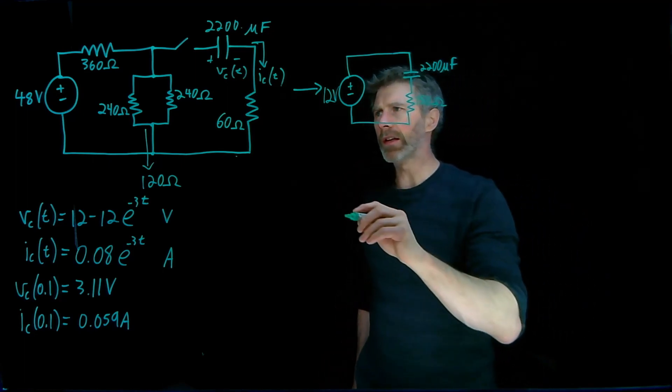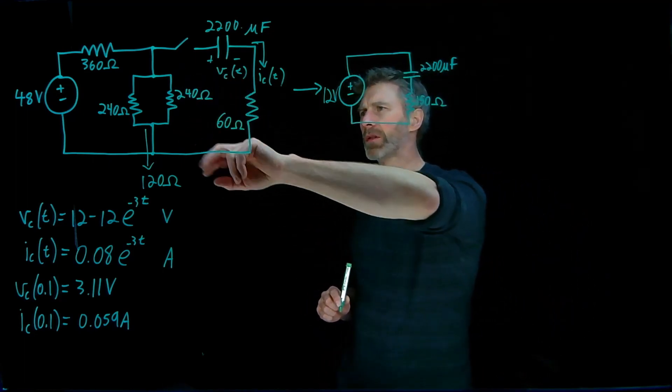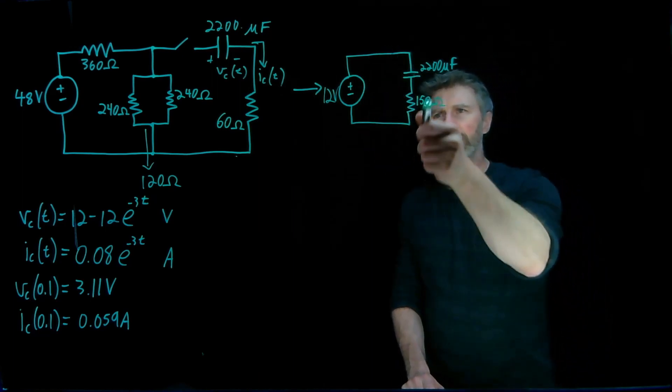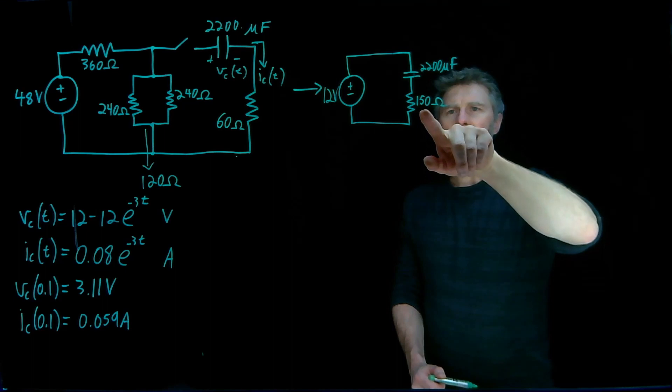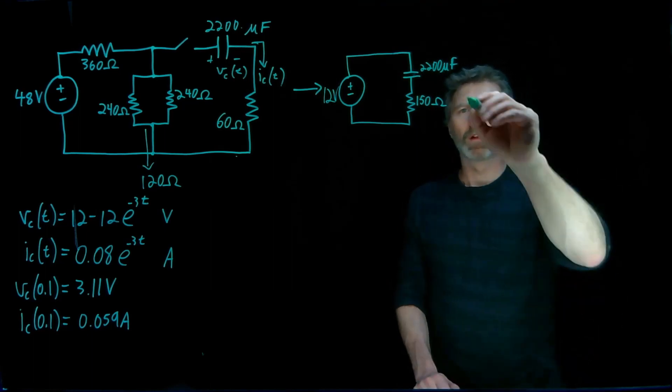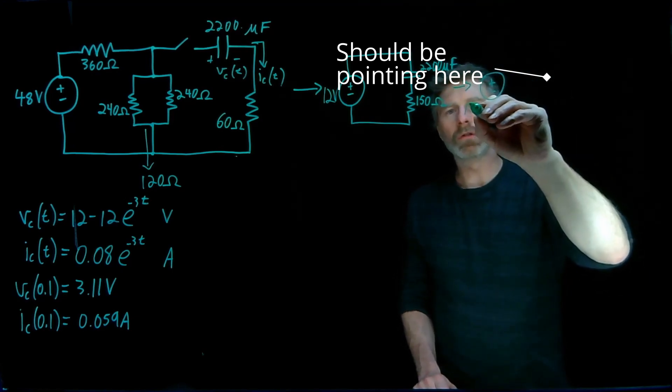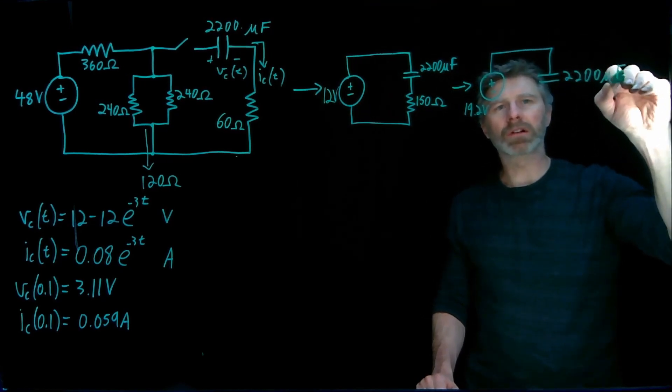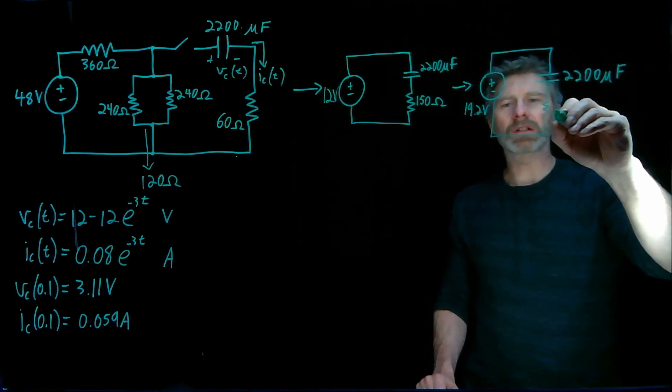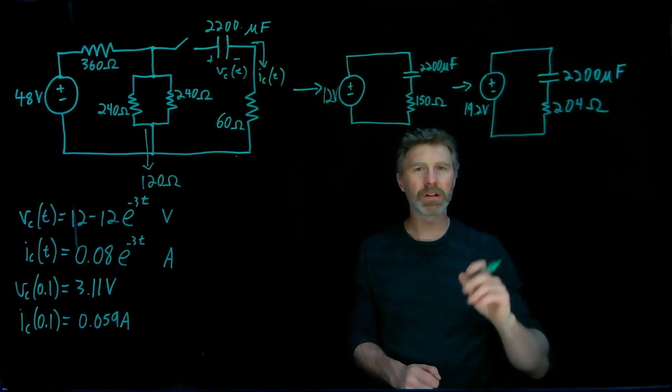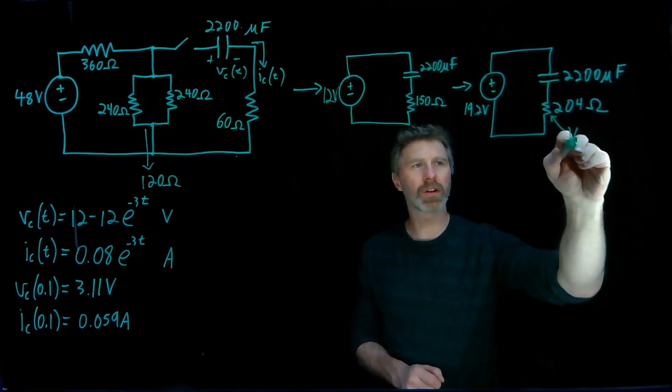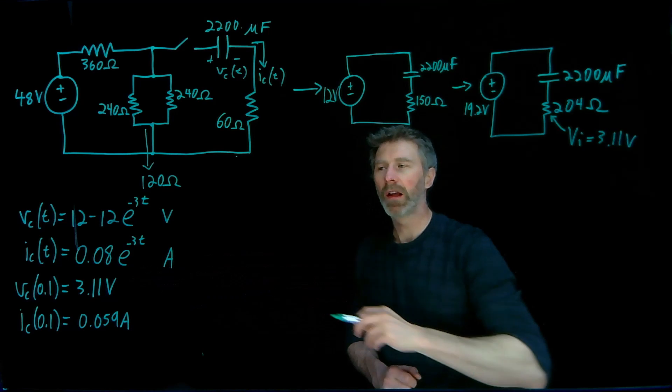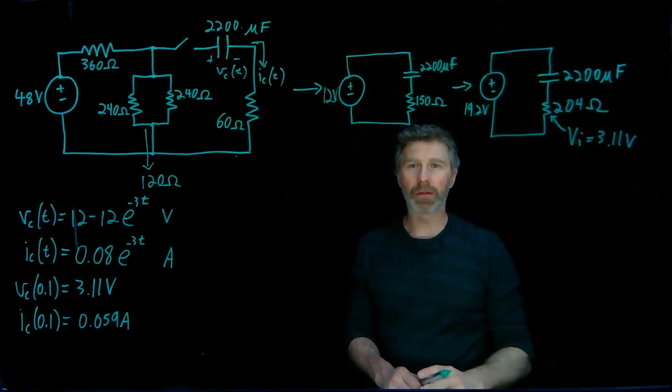And I won't go through that process, but basically what we'll then have, when one of these 240 ohm resistors is pulled out, we'll have 240 ohms there. We'll go through the exact same steps as we did to figure out this equivalent circuit to get a new voltage and a new Thevenin resistance. So when that gets pulled out, what we end up with is a new Thevenin voltage source that's 19.2 volts. We'll still have the 2200 microfarad capacitor and our new Thevenin resistance, 204 ohms. One other piece of information that we have about this circuit is that the initial voltage on that capacitor is 3.11 volts. Because, remember, I'm pulling out this 240 ohm resistor at 0.1 seconds when that input voltage is at 3.11 volts.